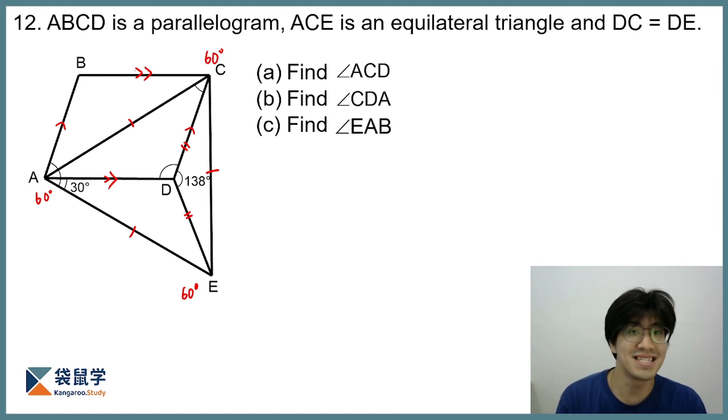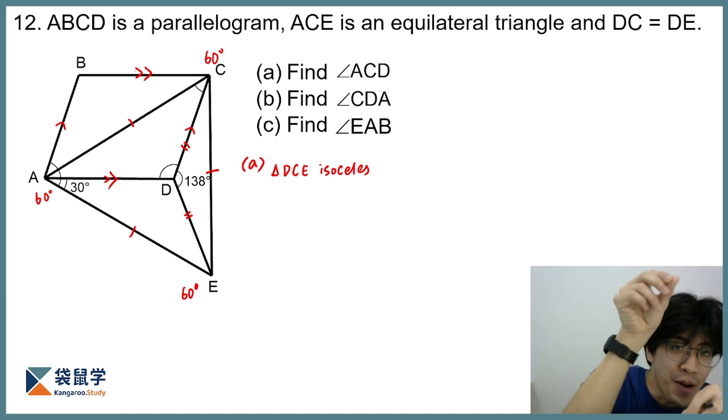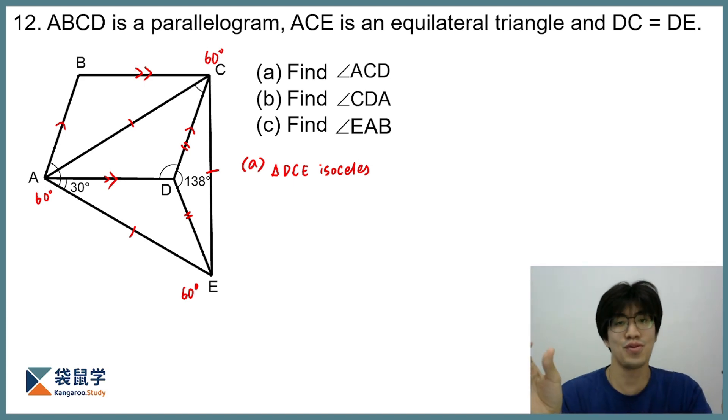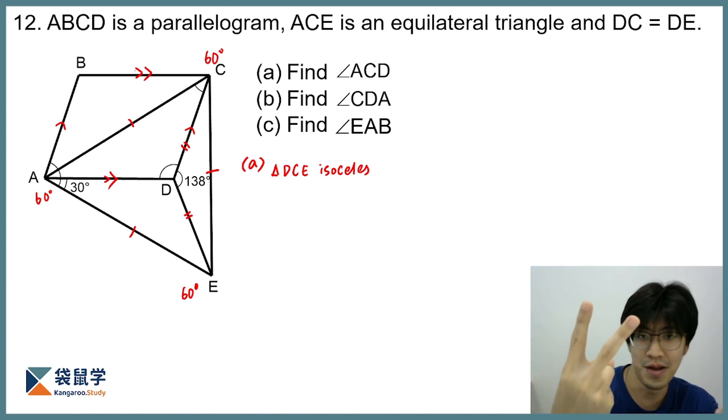The first part, the angle ACD. So starting with part A. Now, to find the angle ACD, again we have to start with the known information. Now, we have seen that DC equals DE tells me that the triangle DCE is isosceles. There's something special about isosceles triangle that you must remember. It's that if you know the top angle, immediately you know the two base angles, because they are the same. So what we can do is that I can simply subtract the top angle with 180 and then divide it by 2.